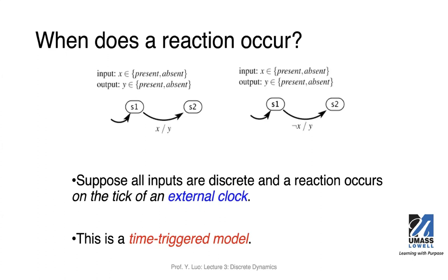A student asked: would a traffic light be an example of a time-triggered model? Yes, you could definitely use a time-triggered model to count the remaining seconds for staying at a certain state or giving out certain lights. That's a good application for the time-triggered model. For that case you can also use event-triggered — for example, using an ultrasound sensor to detect the presence of a car.